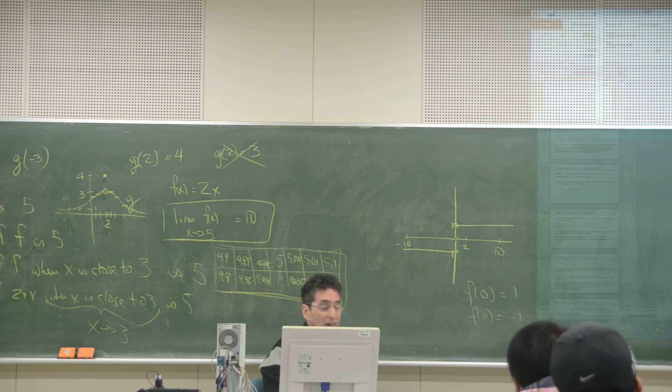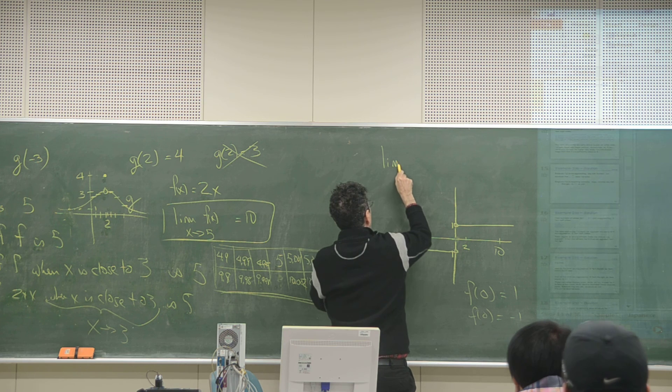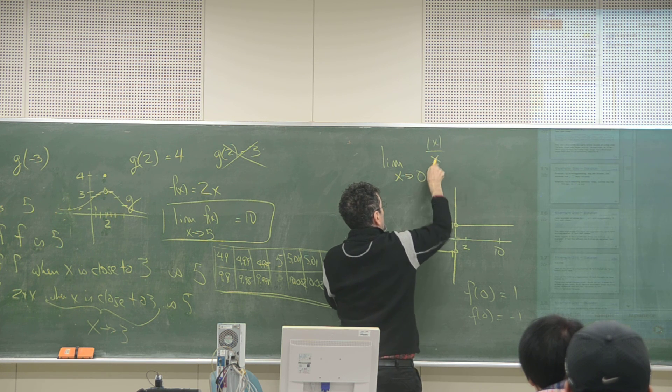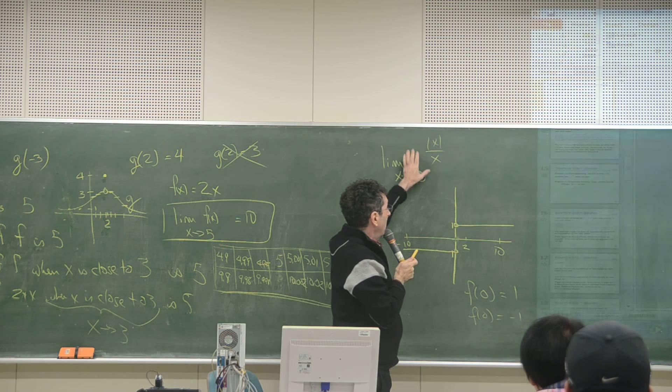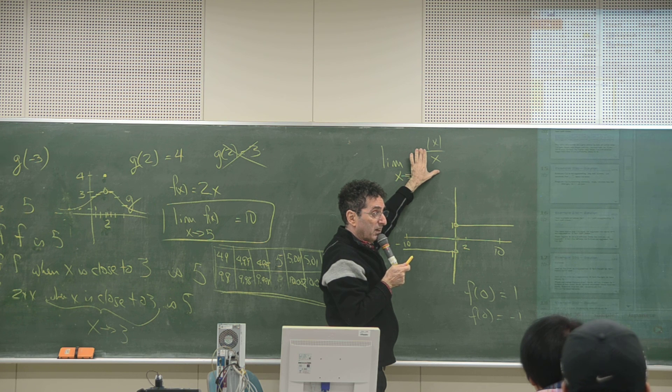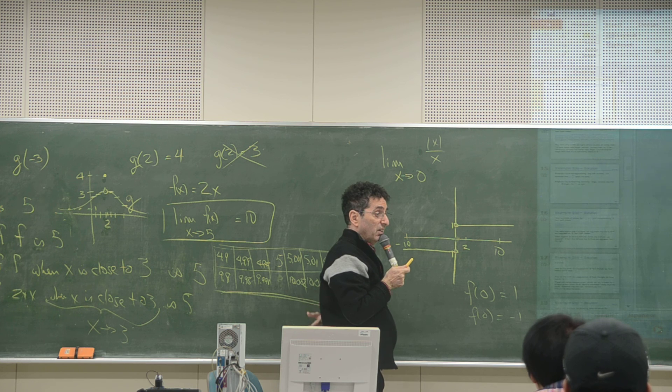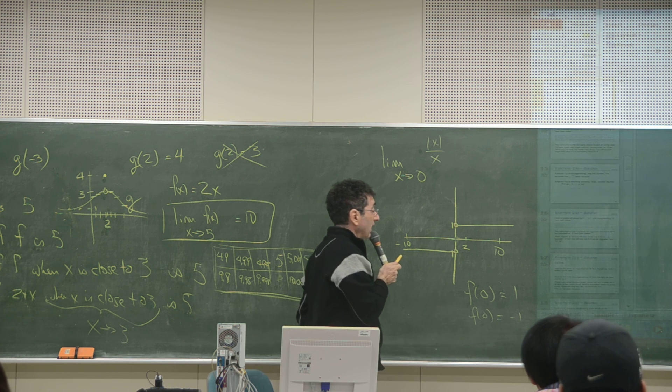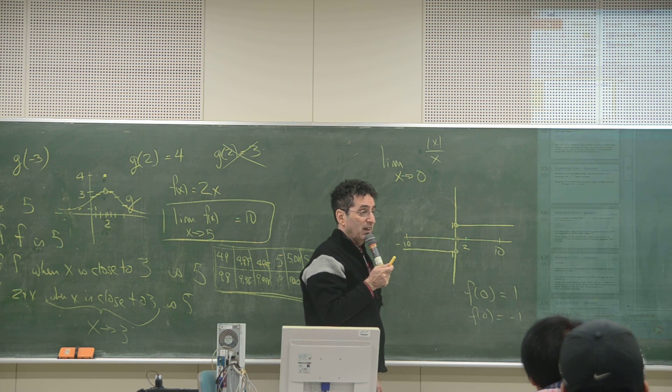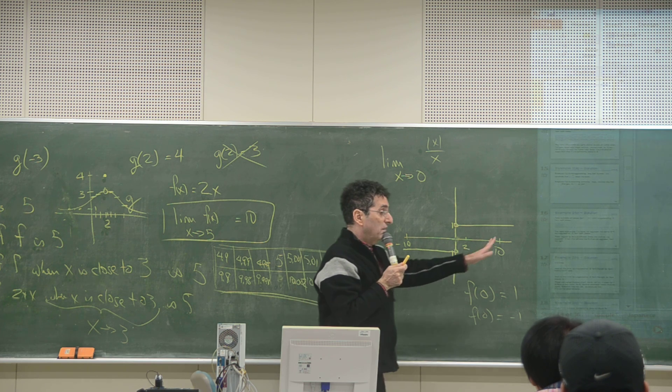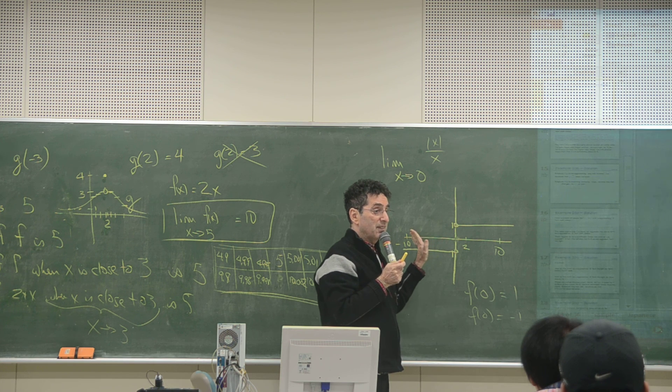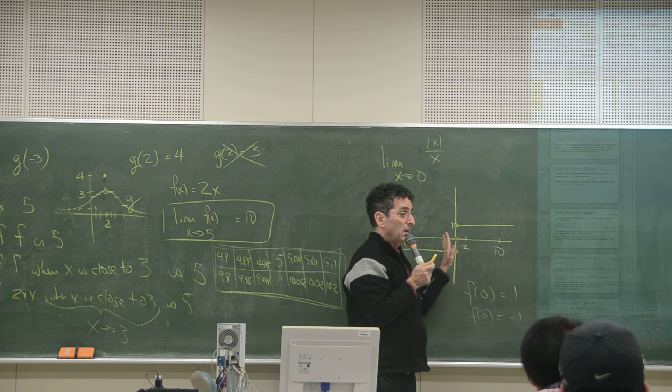All right, now we can do the problem, which is the limit as x goes to 0 of the function. First of all, can I say the function? In other words, is this a function? In other words, does it pass the vertical line test? Yes, it does. So it is a function. So I can use the word function. But now, what's the answer? Now, remember, I very quickly said that if the left-hand side is not the same as the right-hand side, then the limit doesn't exist. So the right-hand side, you would guess the answer.